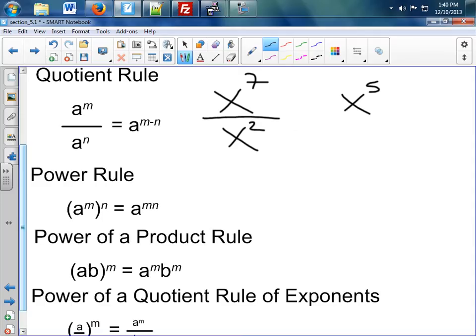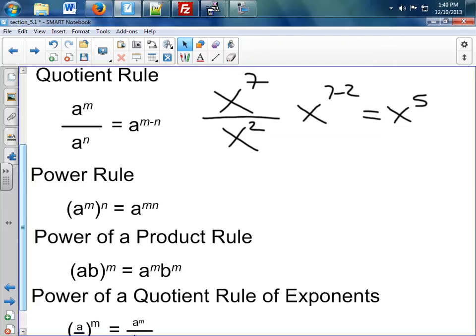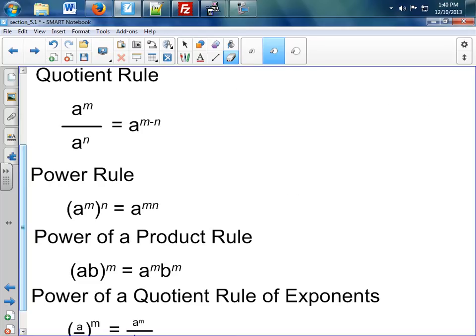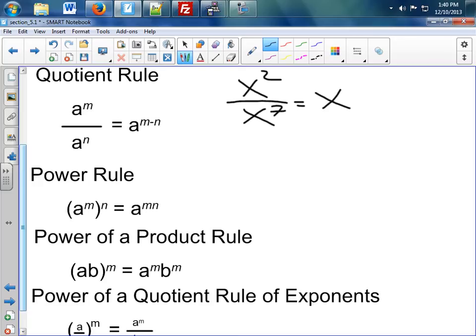For example, mathematically speaking, this is what this means: x to the 7 minus 2 equals x to the third. So if I were to erase this and I switch it, by using the Quotient Rule, it means 2 minus 7, which is x to the negative 5.